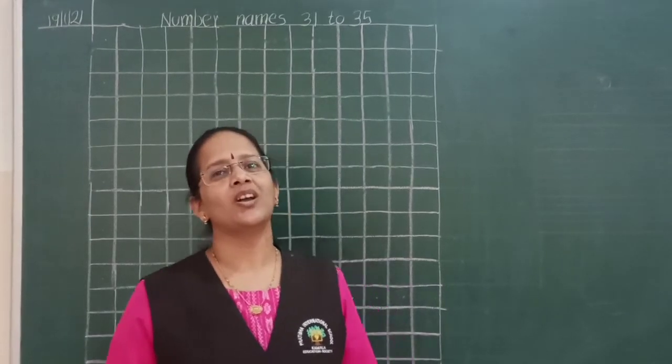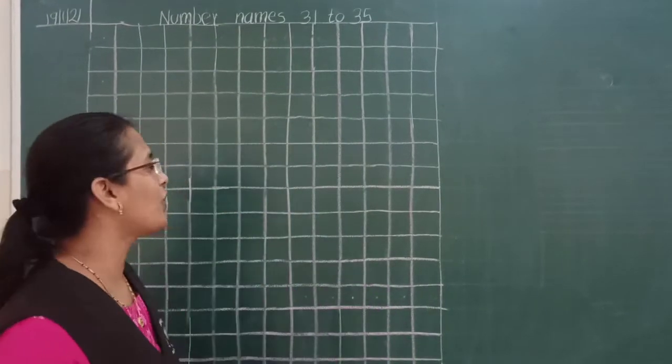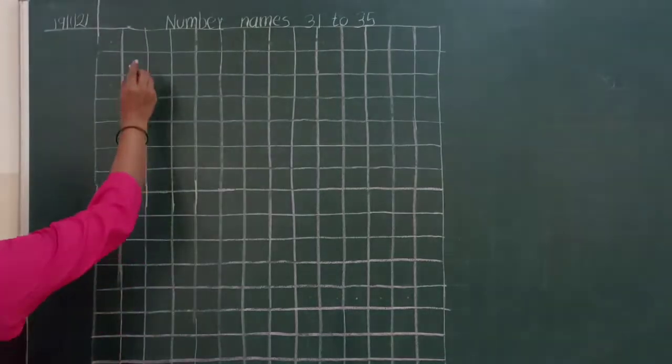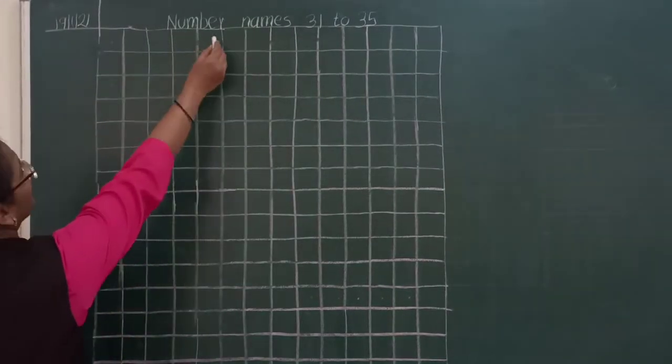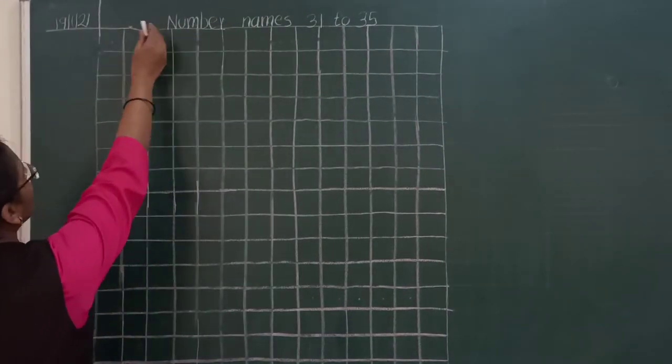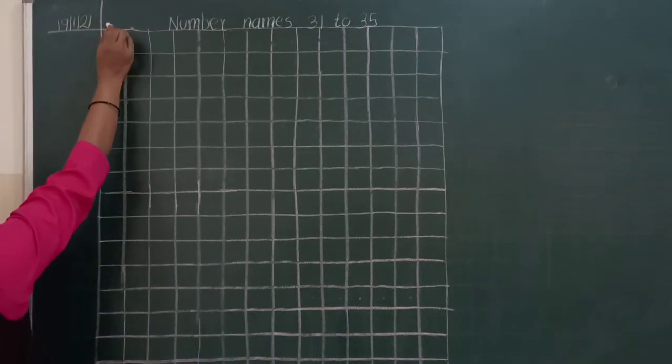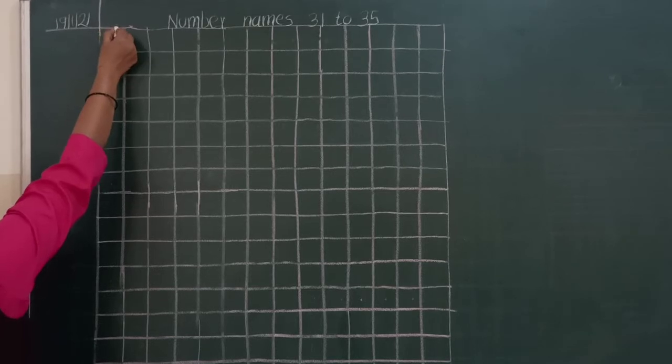So, let's write from 31. Start your heading, rule it, and start from the first column.